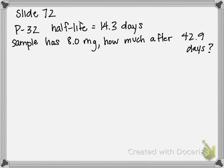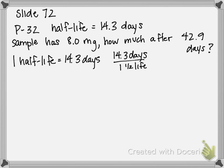So the first step in figuring out how much of this phosphorus-32 remains after a certain number of time is to figure out how many half-lives are in 42.9 days. That's the amount of time that has passed. So we can say one half-life is equal to 14.3 days. And we can change that into an equivalency, 14.3 days per one half-life or one half-life per 14.3 days.